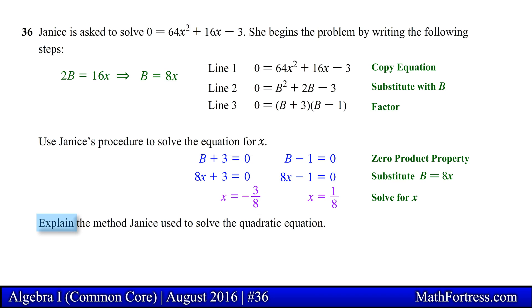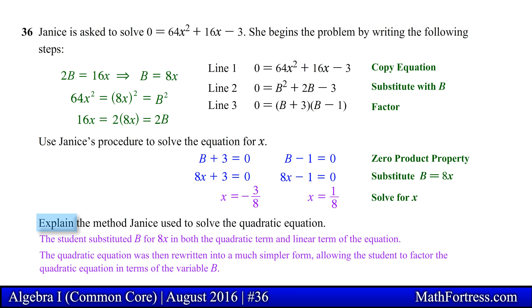Next we need to explain the student's method for solving this quadratic equation. The student essentially substituted b for 8x in both the quadratic term and linear term of the equation. Notice that 64x squared can be written as the quantity 8x squared. When b is substituted for 8x we obtain b squared. Likewise the linear term 8x gets replaced with b. By carrying out these substitutions the quadratic equation is rewritten into a much simpler form allowing the student to factor the quadratic equation in terms of the variable b. Once factored the student then solved for x by substituting back the value of b with 8x which can then be solved to obtain the solutions to the quadratic equation.